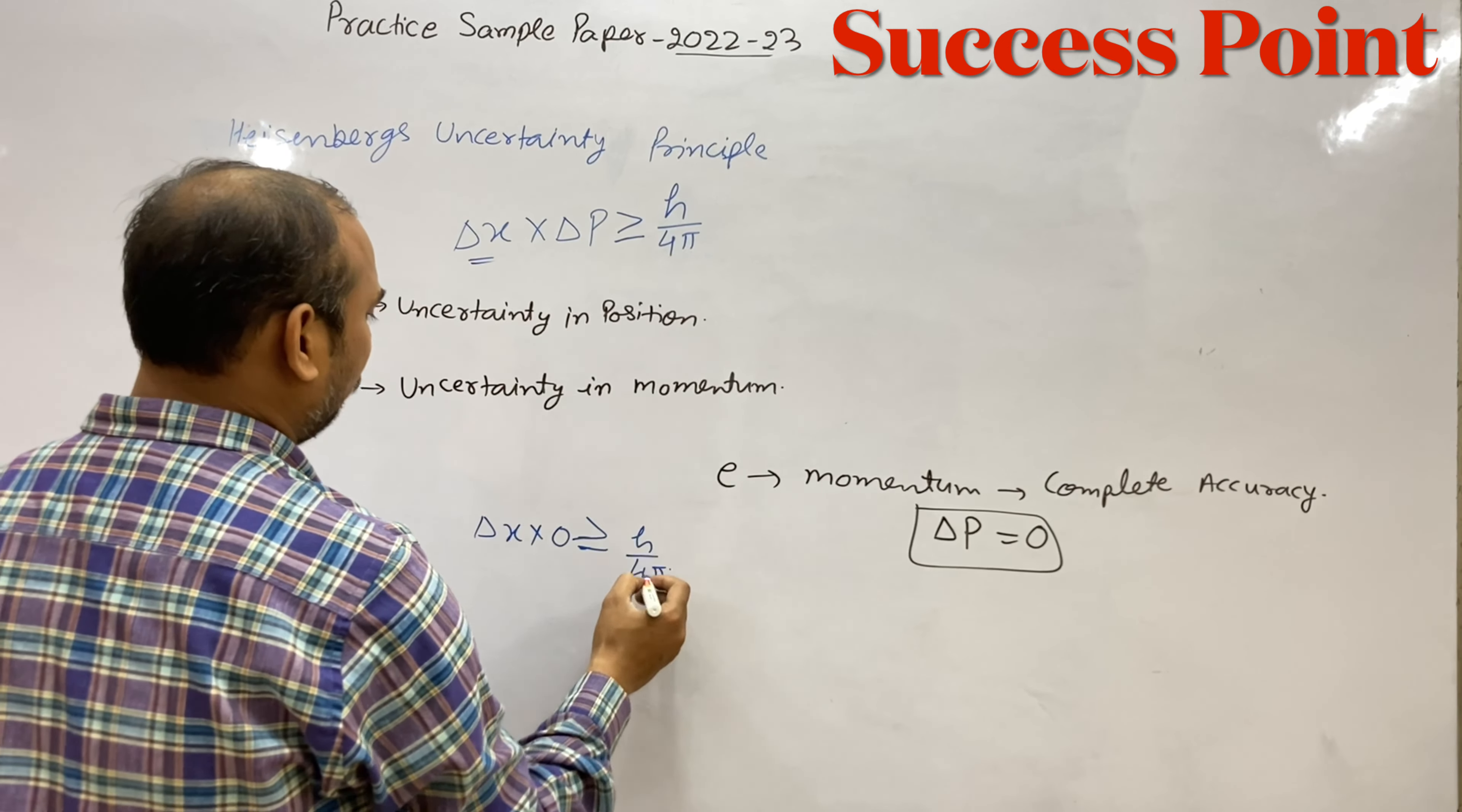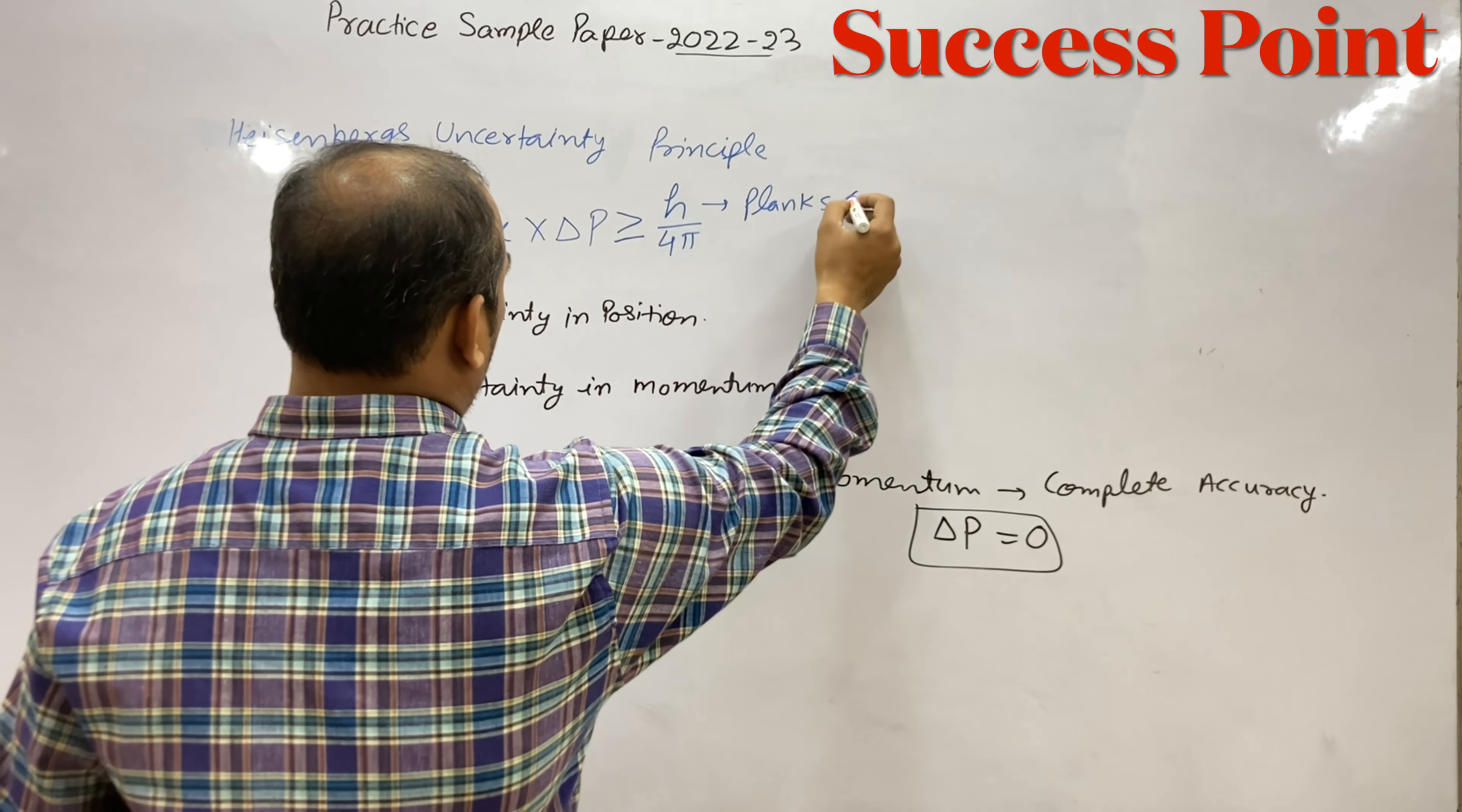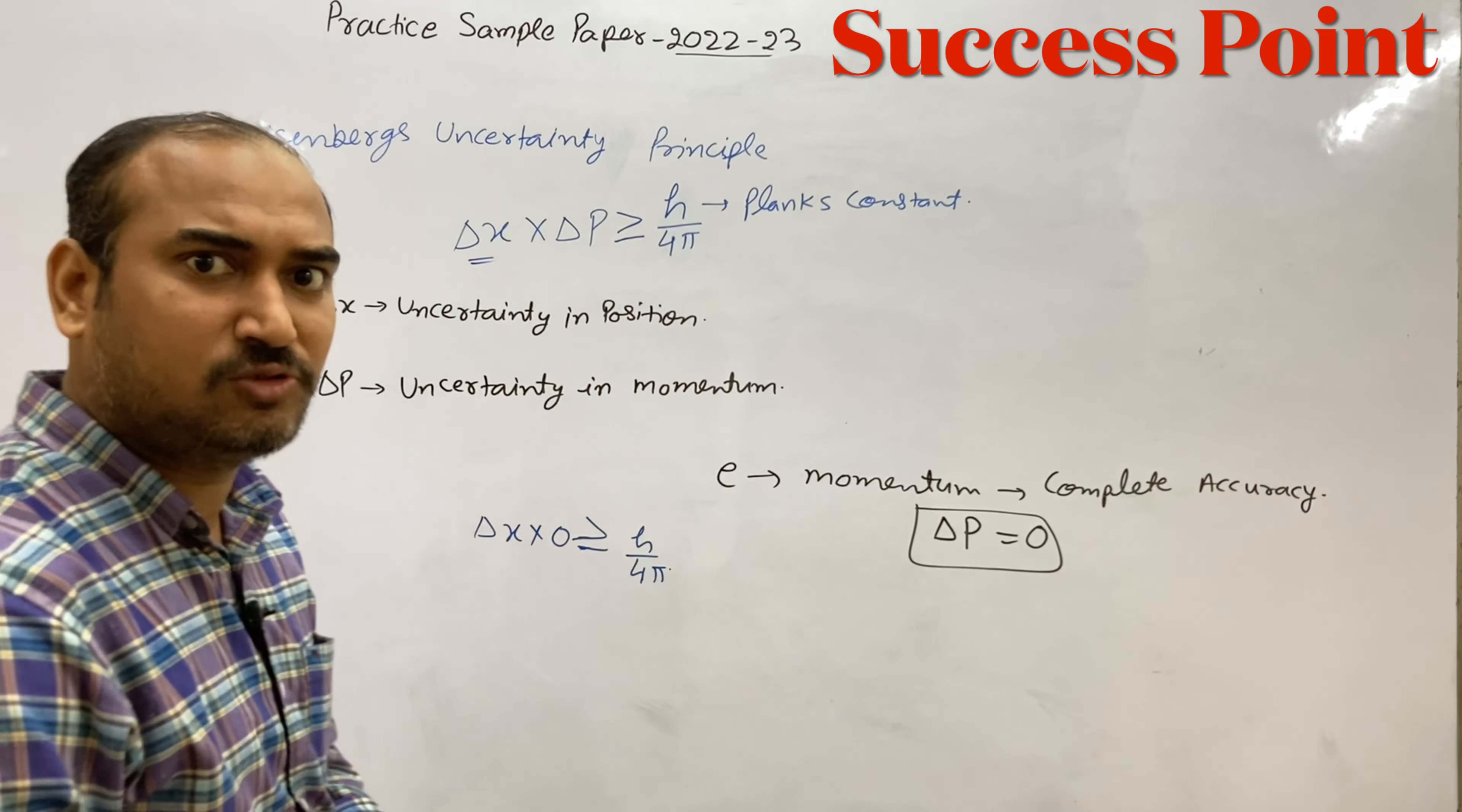where h is Planck's constant, which has a value of 6.626 times 10 to the power minus 34 joule-seconds.